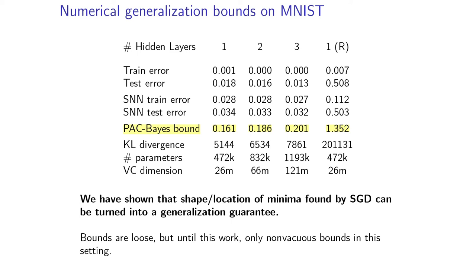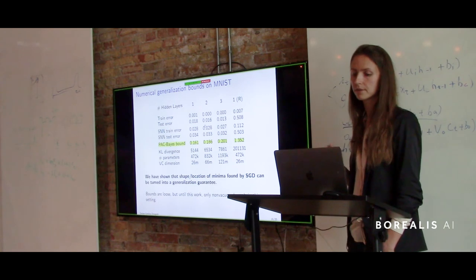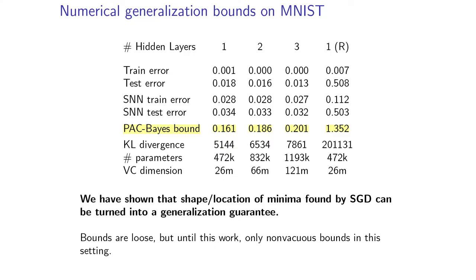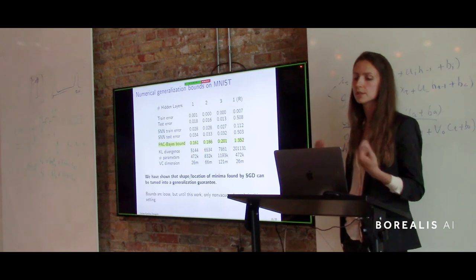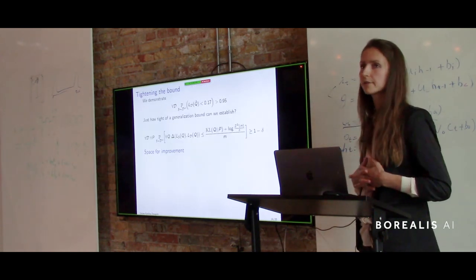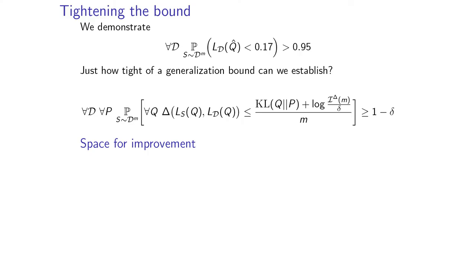Here are our results. We trained one-, two-, and three-hidden-layer neural networks on binarized MNIST. The training error in all three cases was around 0%, and the test error was between 1% and 2%. The stochastic classifier error under the Gaussian perturbation is a little bigger at around 3%, and the test error of the stochastic classifier is also about 3%. The PAC-Bayes bounds bound the stochastic classifier test error by 16% to 20%. It's fairly loose, but we've shown we can map the shape and location of the minimum found by SGD to non-vacuous generalization bounds.